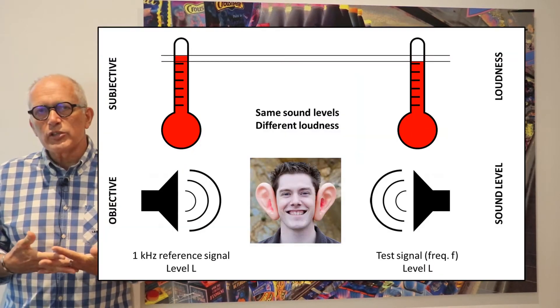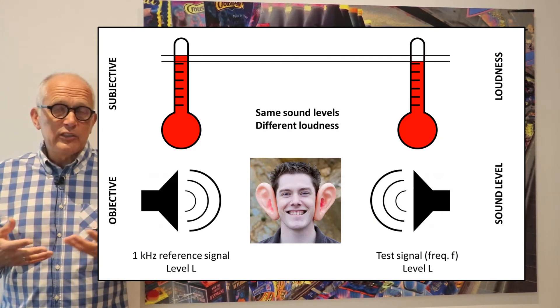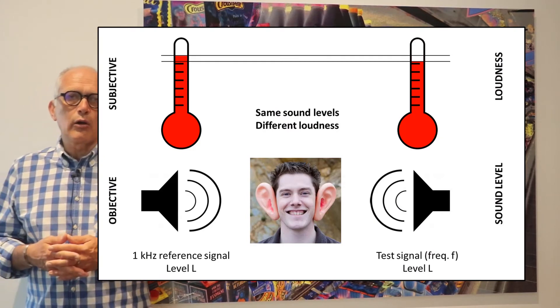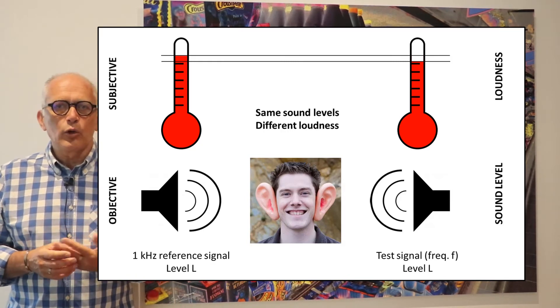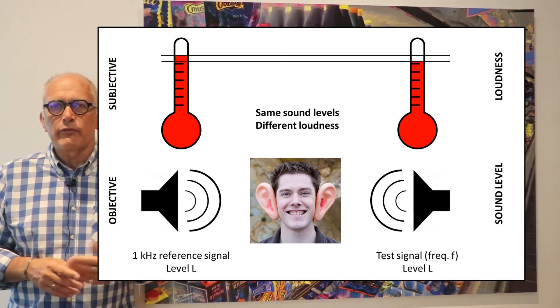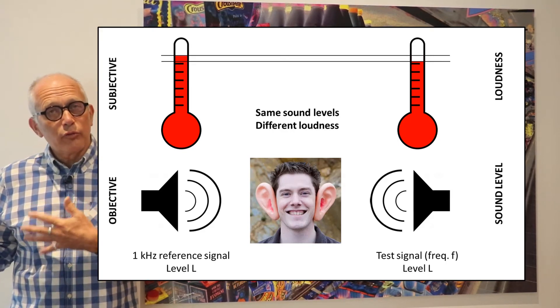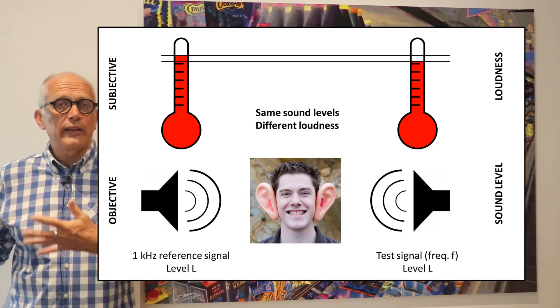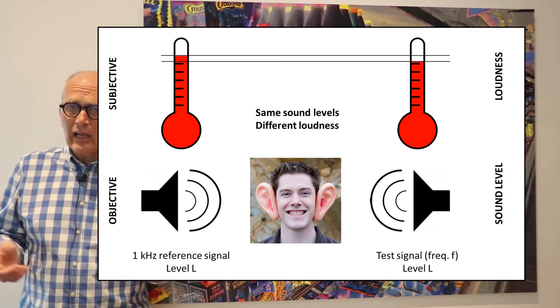The principle of the measurement by Fletcher and Munson is simple. They exposed a large number of people to a reference sound at one kilohertz with a certain given level L, and then exposed the same person to a sound at another frequency.